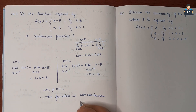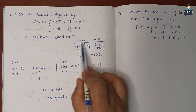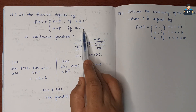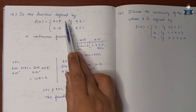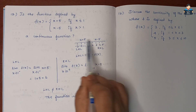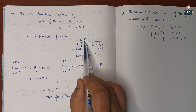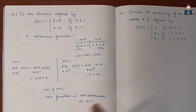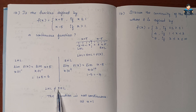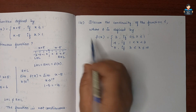Since LHL = 6 and RHL = -4, they are not equal. The function changes at x = 1: for x less than or equal to 1 one formula applies, and for x greater than 1 another applies. Therefore, the function is not continuous at x = 1, since LHL and RHL are not equal.